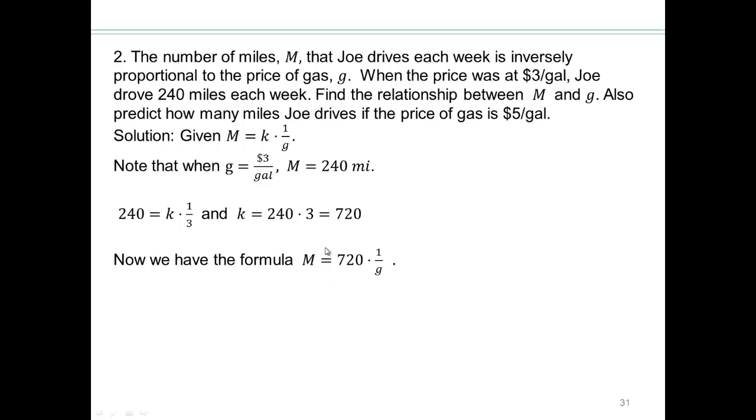So now they're asking you predict how many miles Joe drives if the price of gas is $5 a gallon. So if you have $5 a gallon price for g, then 720 times 1 fifth, which will give you about 144 miles. That's how much he can drive if the price of gas was $5 a gallon.